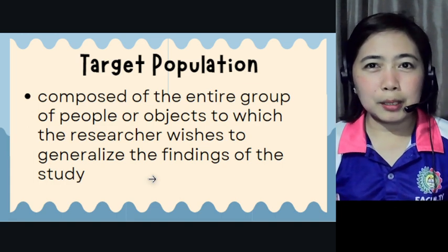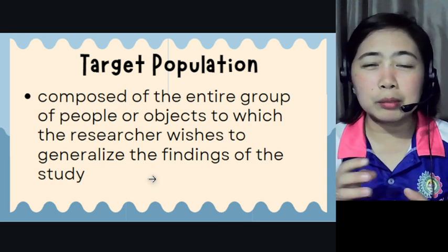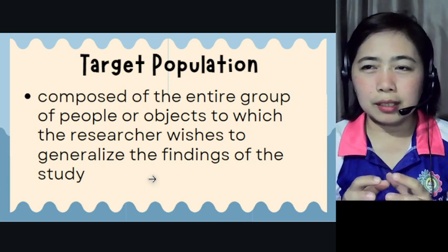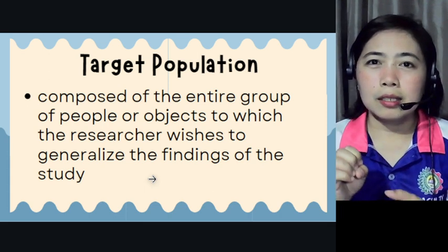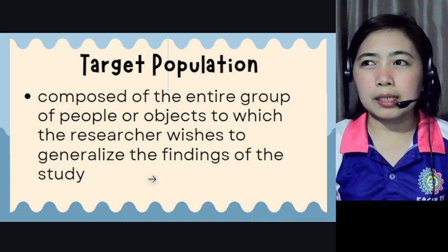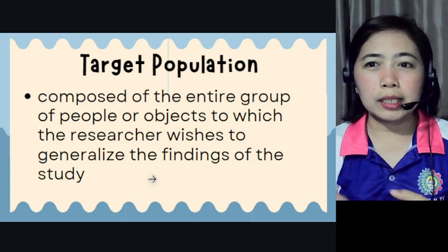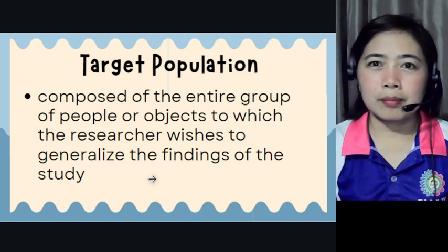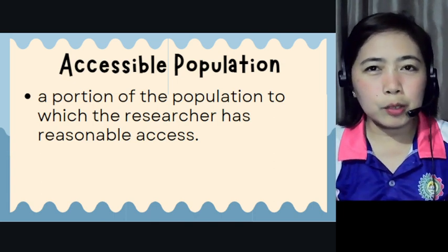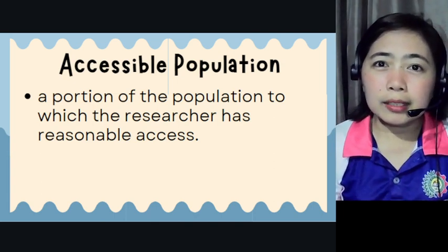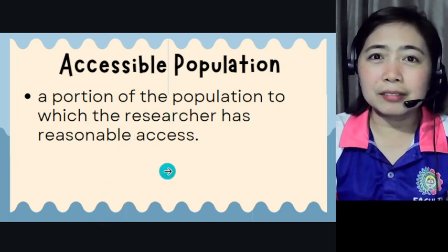Since PWD is a very wide scope, you can sub-group it — you can focus on the blind, the deaf, or the physically handicapped. So you can focus better. Accessible population is a portion of the population to which the researcher has reasonable access.